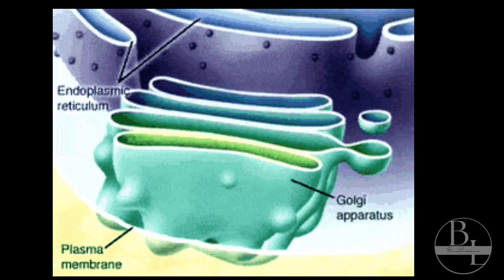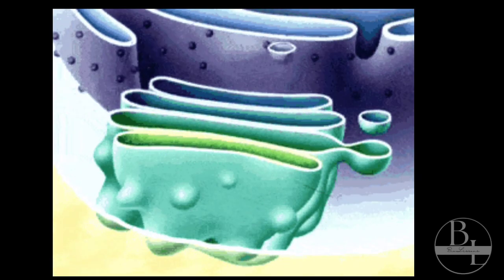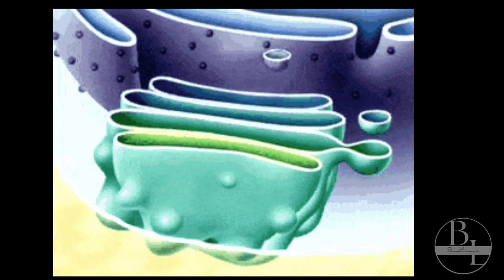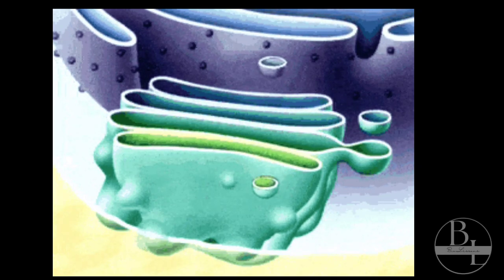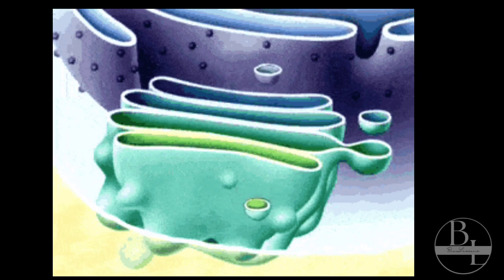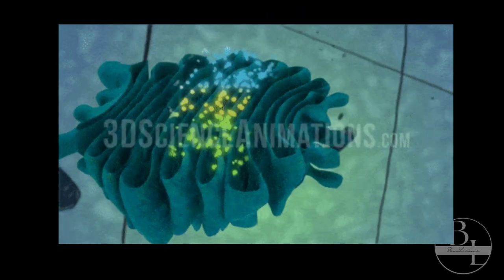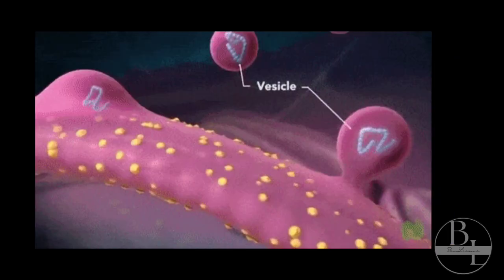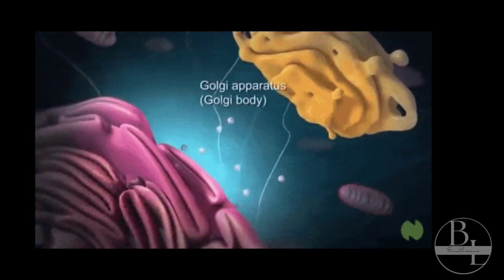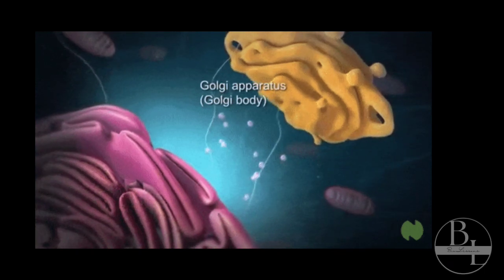The transport vesicles that pinch off from the endoplasmic reticulum merge with the cis phase of Golgi cisternae and add its contents into the lumen. This explains why Golgi bodies are usually located near the endoplasmic reticulum. Modified and condensed secretions leave Golgi through the trans phase as membrane-bound vesicles.